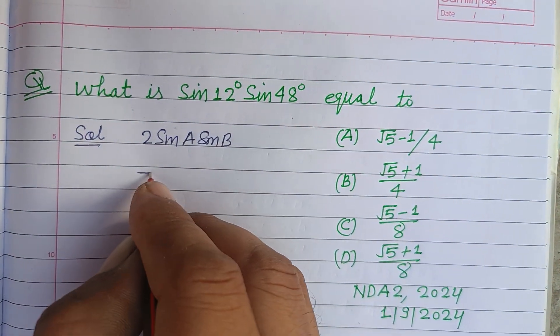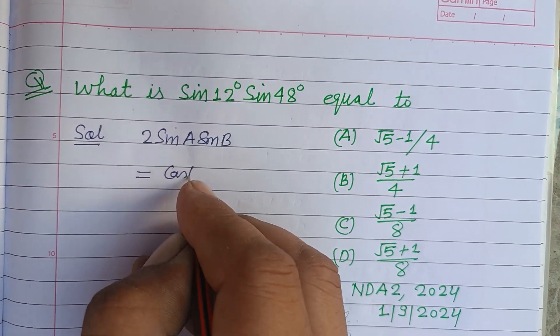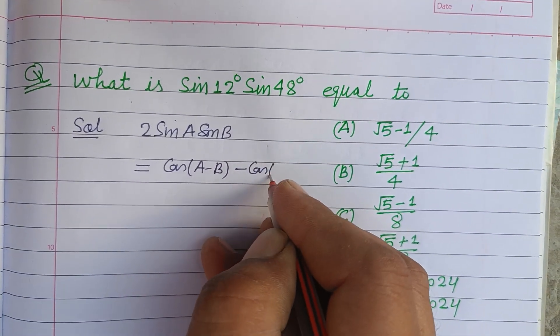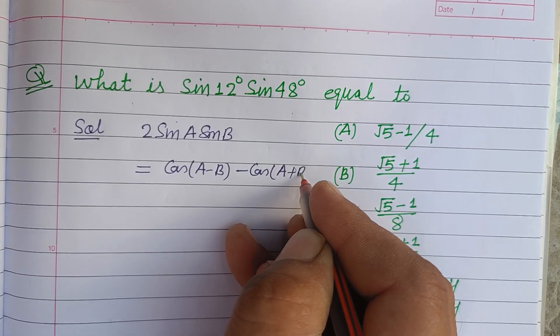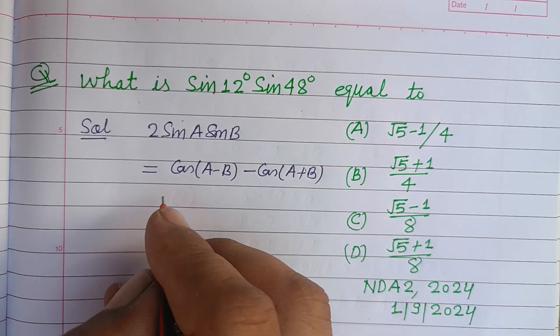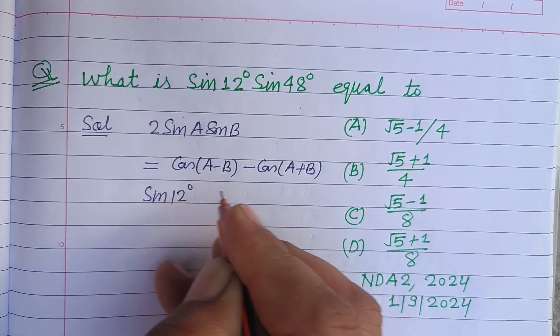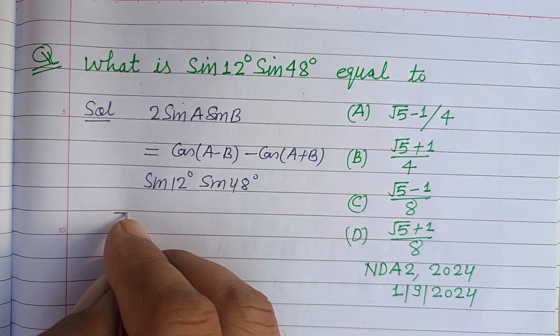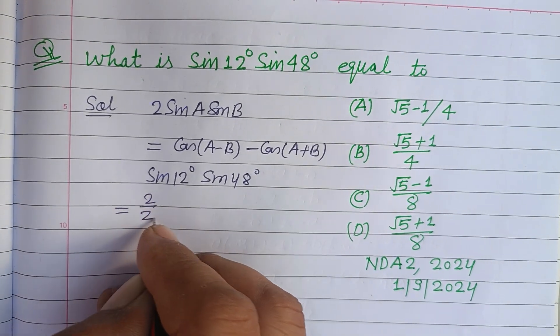We write it as 2 sin A sin B, and this is equal to cos(A - B) minus cos(A + B). So first learn this formula. Here we have given sin 12° into sin 48°. We multiply and divide this by 2.